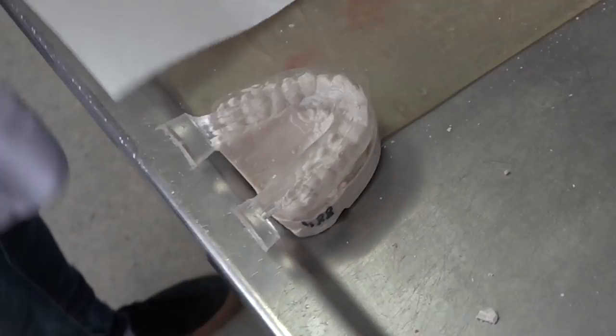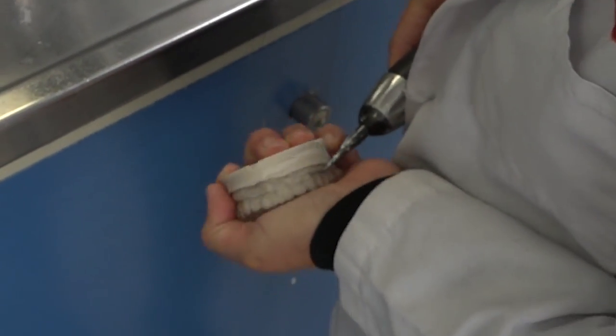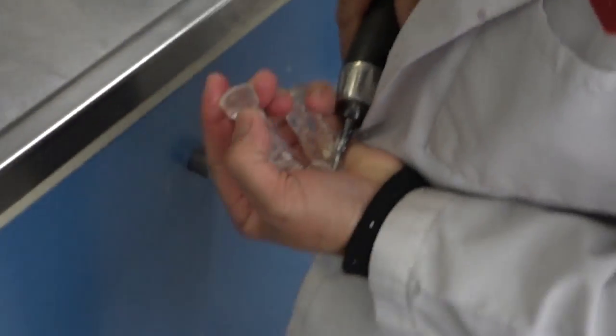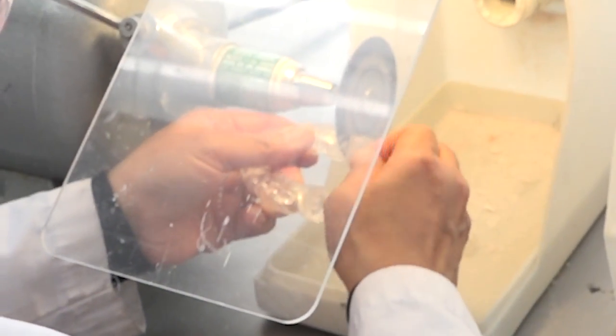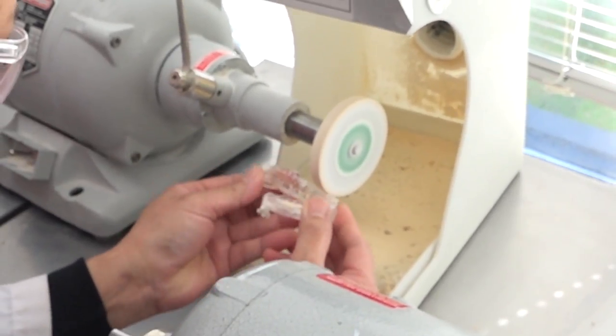Remove mold from frame. Remove model from mold. Chisel model off of night guard, clear away debris, cut off pouring stumps, and trim away excess from night guard.